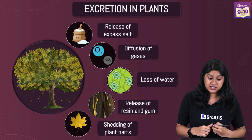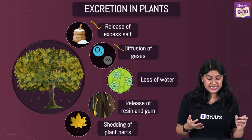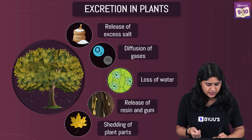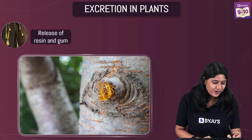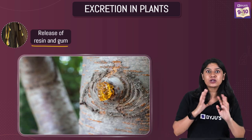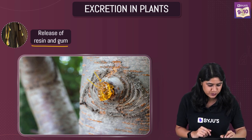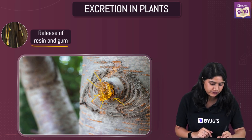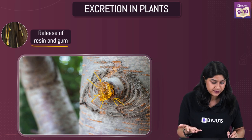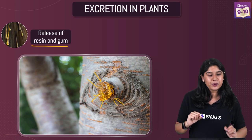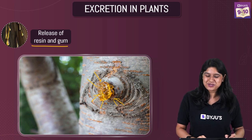So far we have discussed the release of excess salt, diffusion of gases, and loss of water. Now we will discuss the release of resins and gums. This is a common excretion in plants that we usually see. This is also one way in which plants excrete out their waste. Write in the comment section below and tell us which plants actually excrete resins and gums.